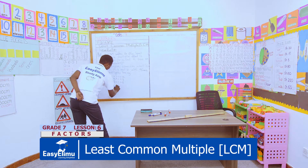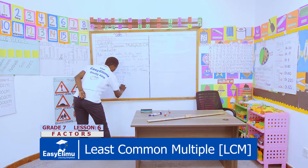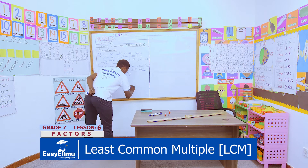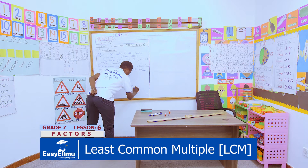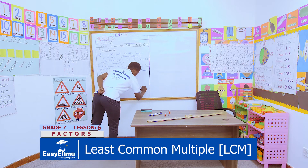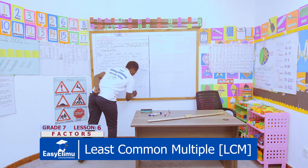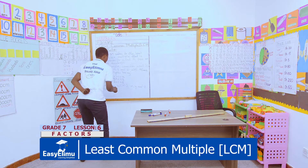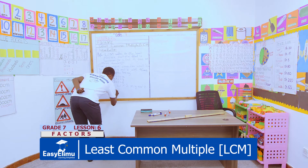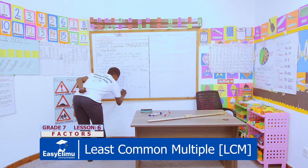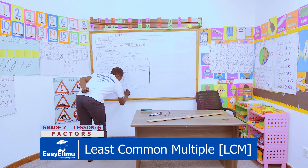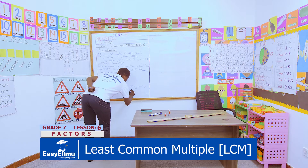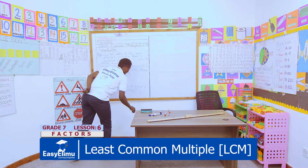Then the LCM of x, y, and z becomes x times y times z, which is equal to xyz.